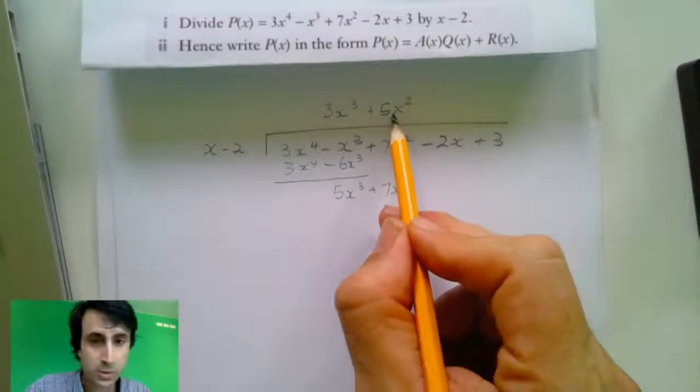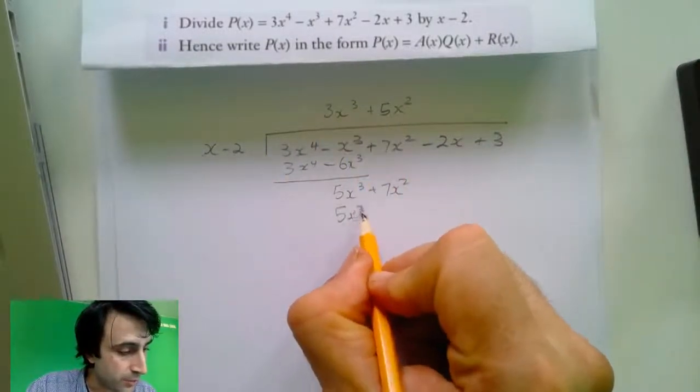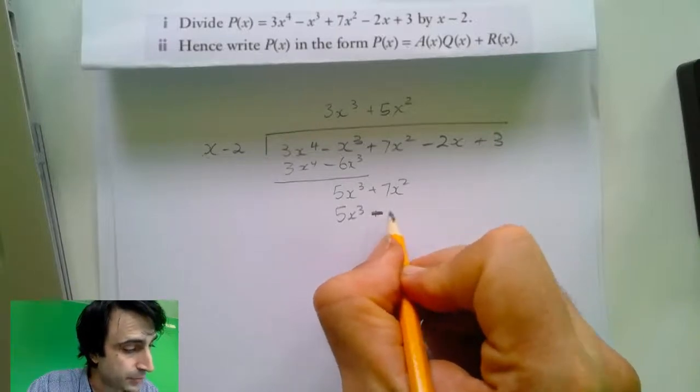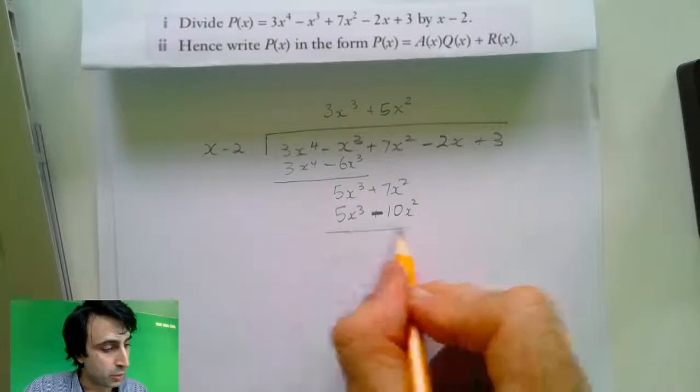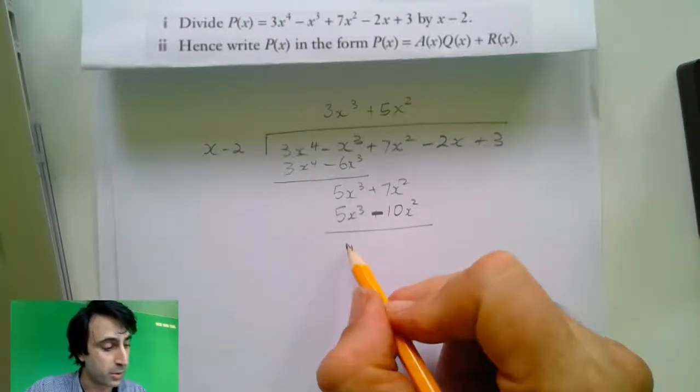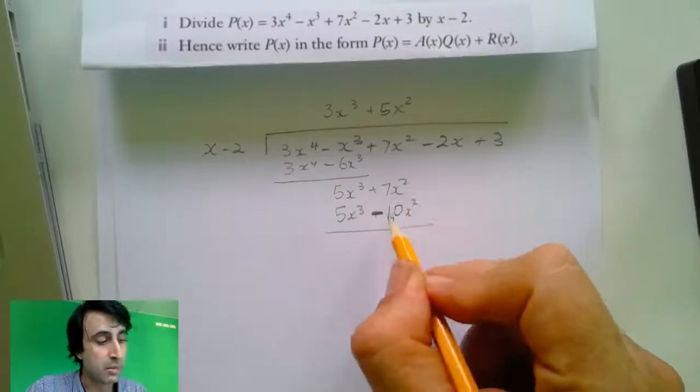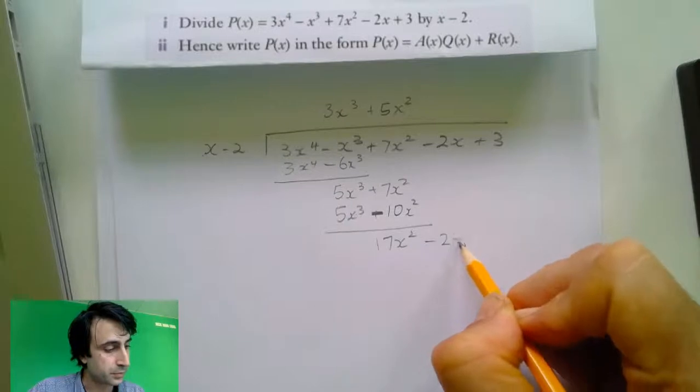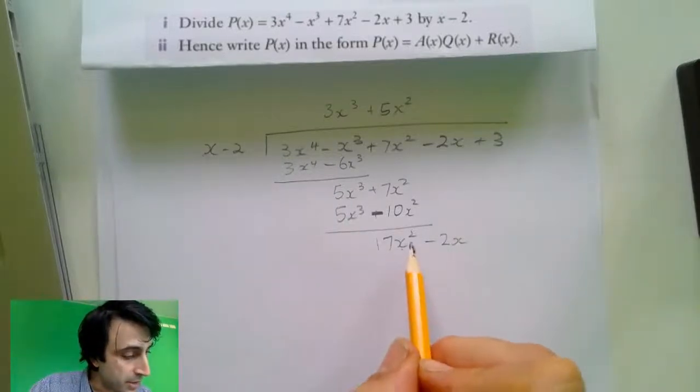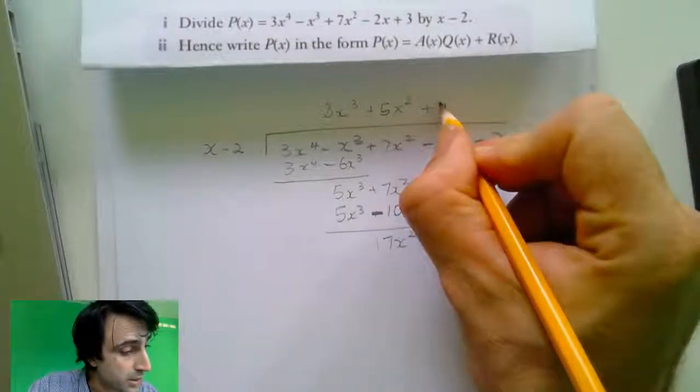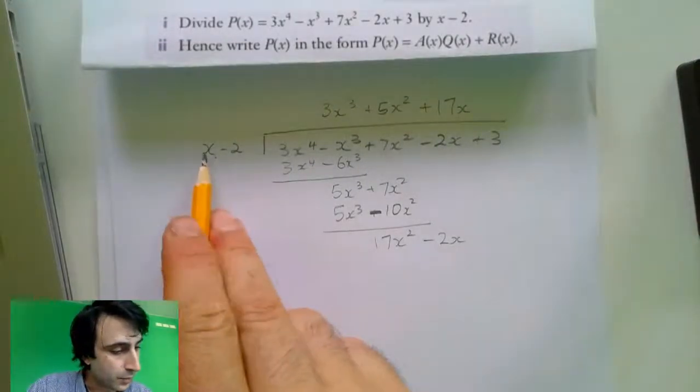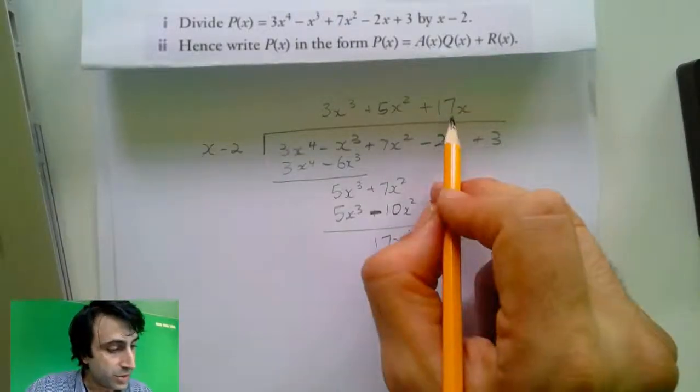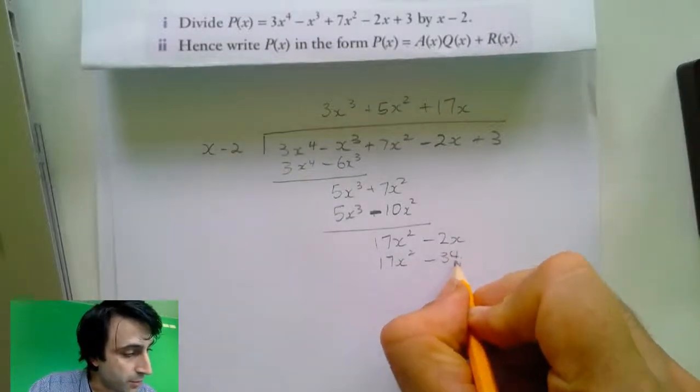Now, we do the same thing. What's 5x squared multiplied by x? 5x cubed. Now, what's 5x squared multiplied by negative 2? That's negative 10x squared. Rule the line and subtract the second line from the first. They cancel out and 7x squared minus negative 10x squared is 17x squared. Bring down the next one. x divided into 17x squared equals 17x.